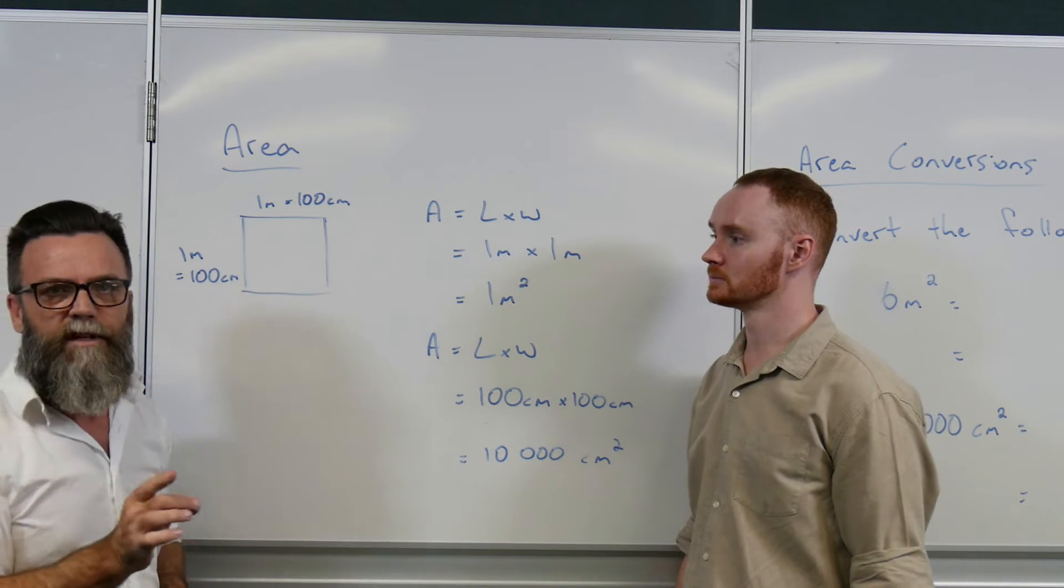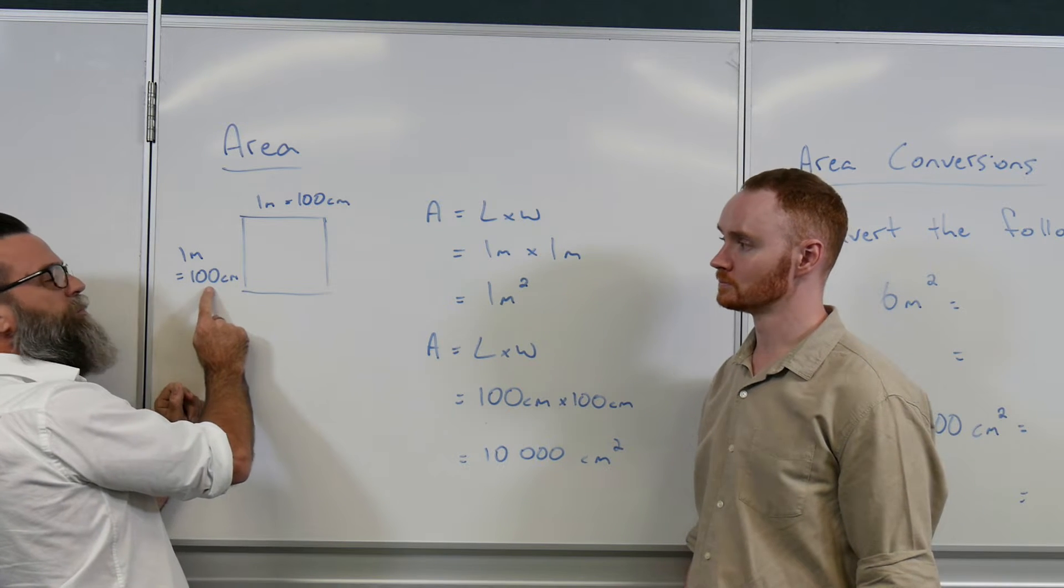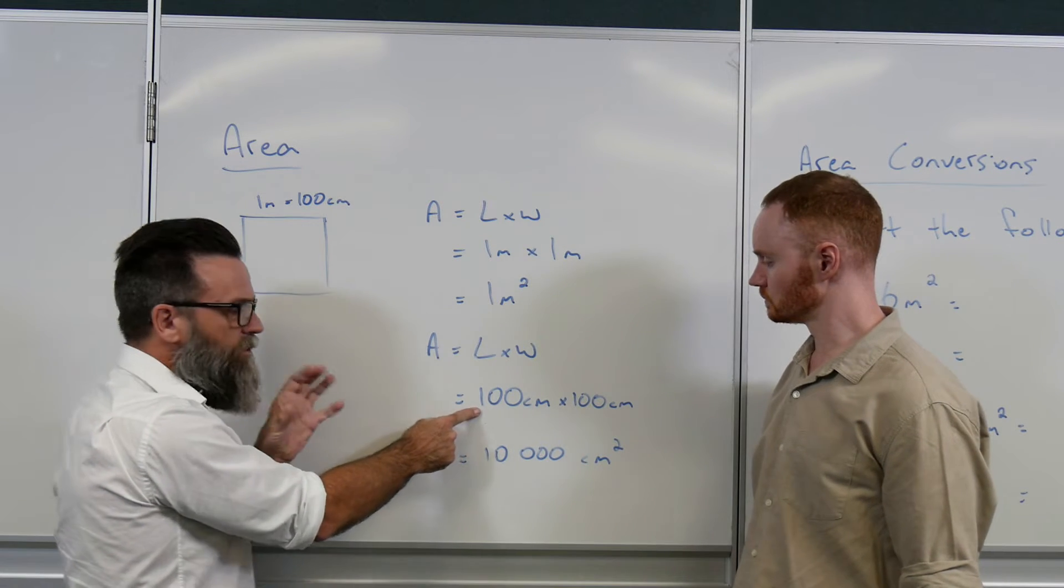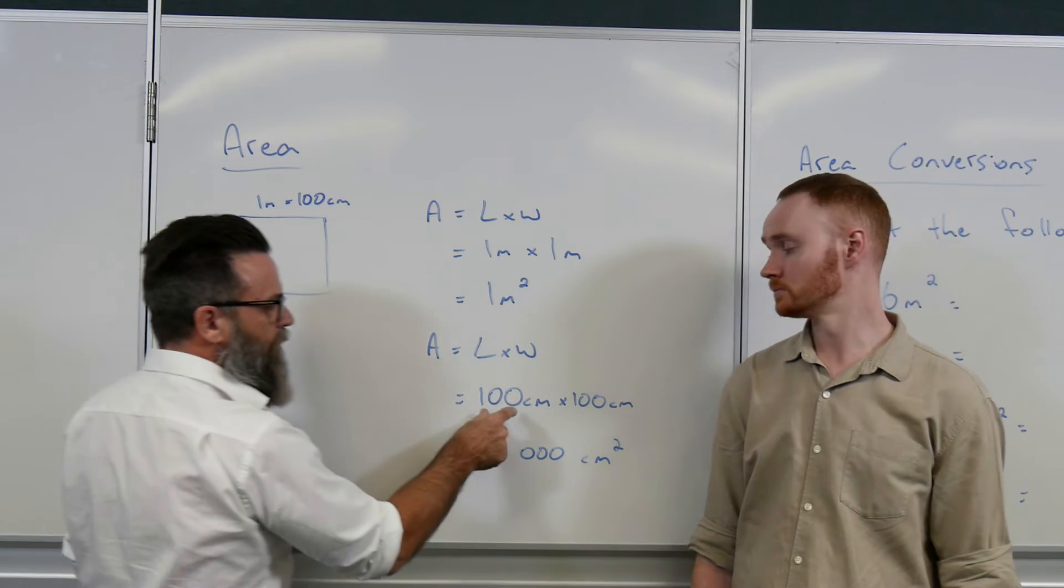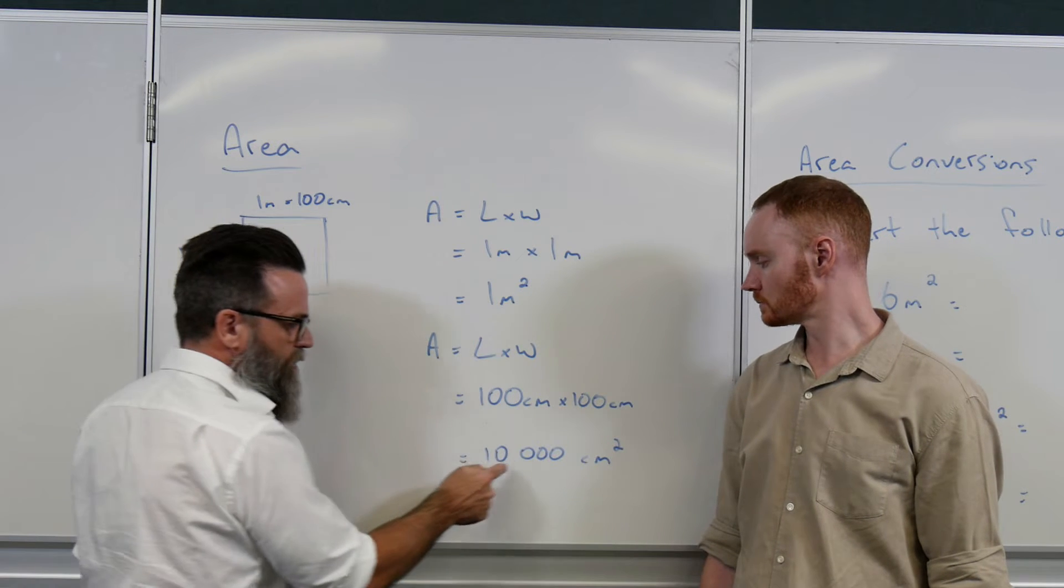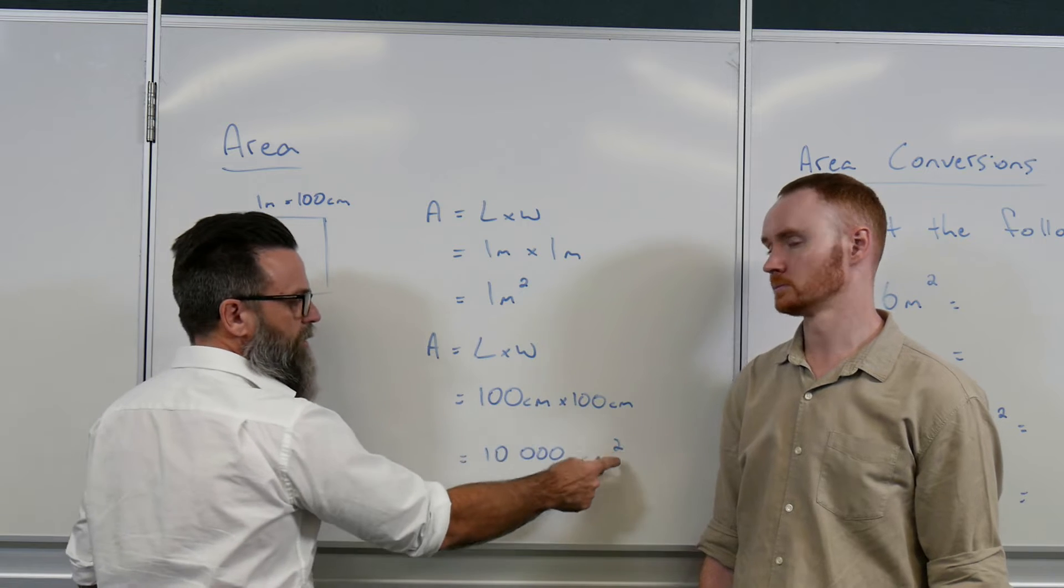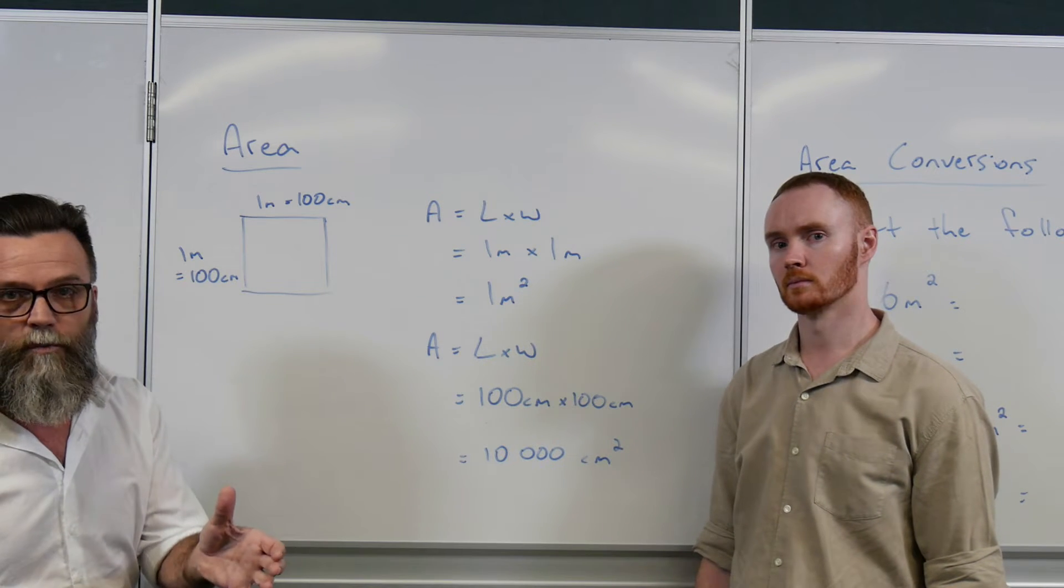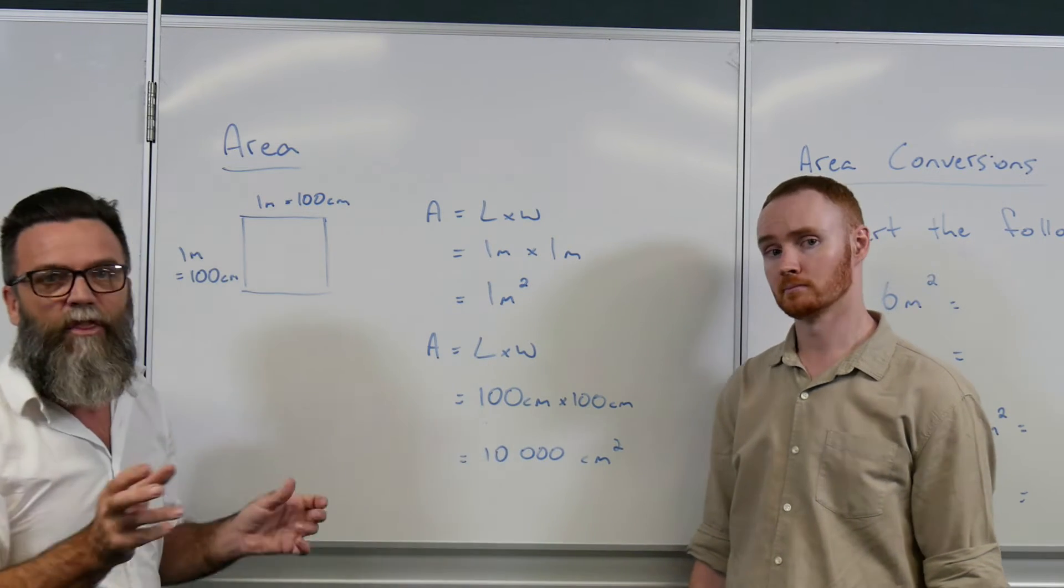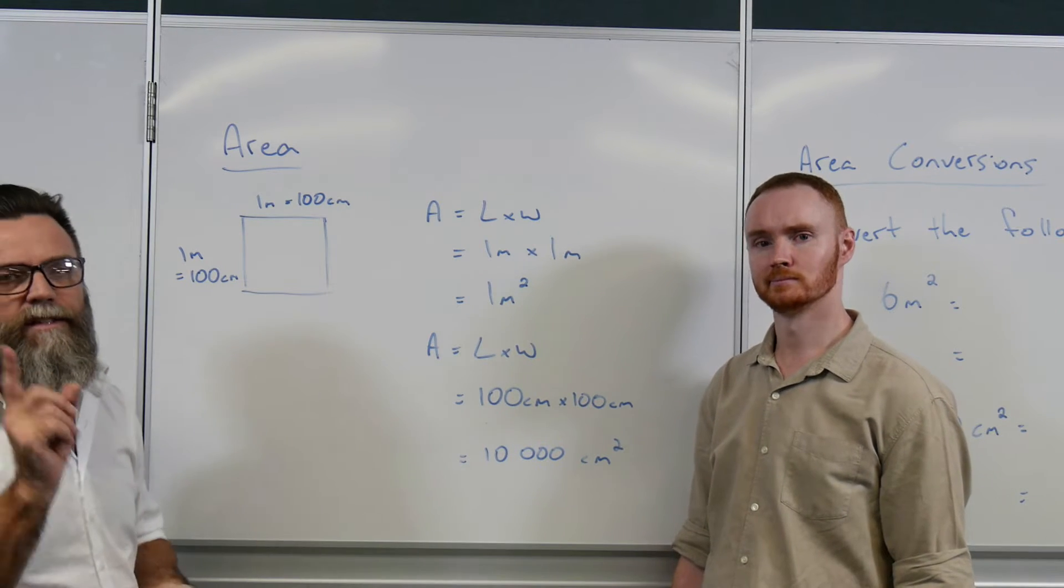And if we look at one meter times one meter, one times one is actually one. And if we've got meters times meters, the answer is actually meters squared. So I know that if I've got a one meter by one meter square, the area of that is one meter squared. That makes sense. But let's have a look at what happens in centimeters. If we didn't put that as one meter, we put that as 100 centimeters and similar down here, we put that as 100 centimeters.